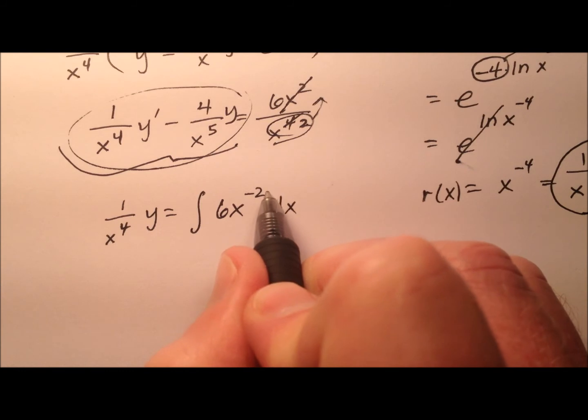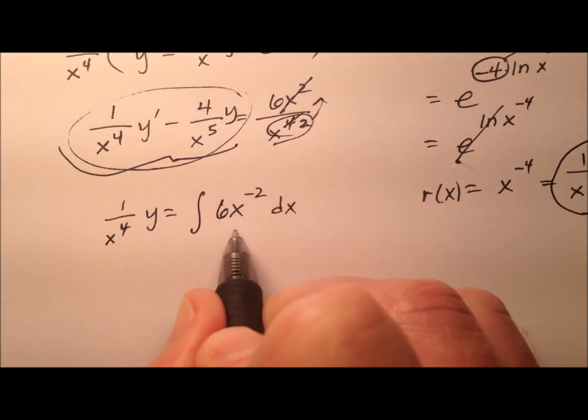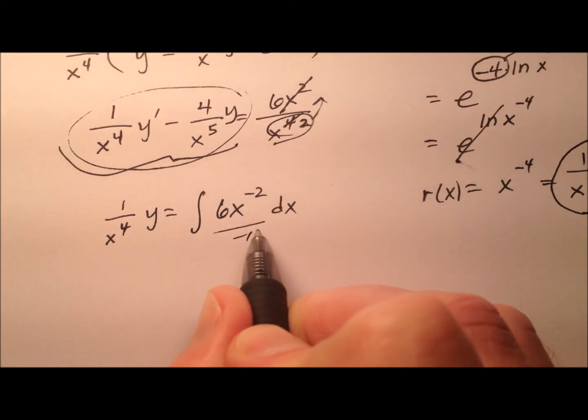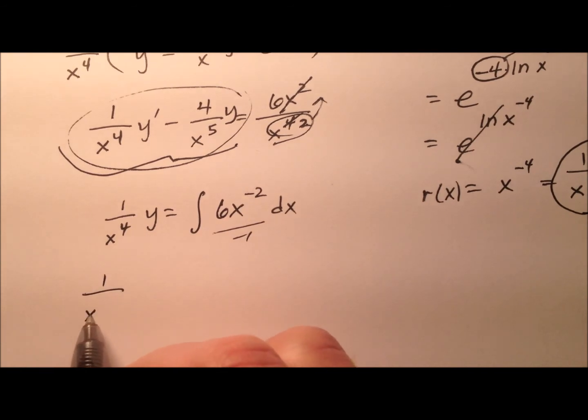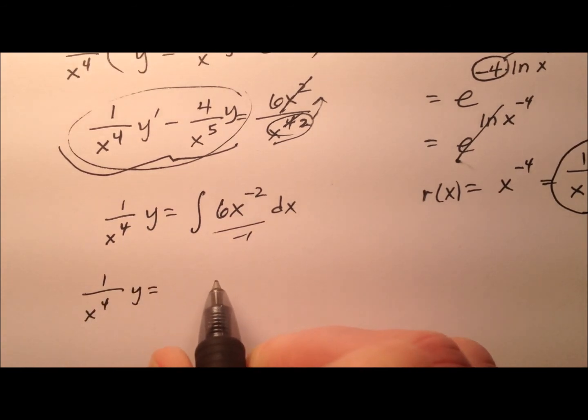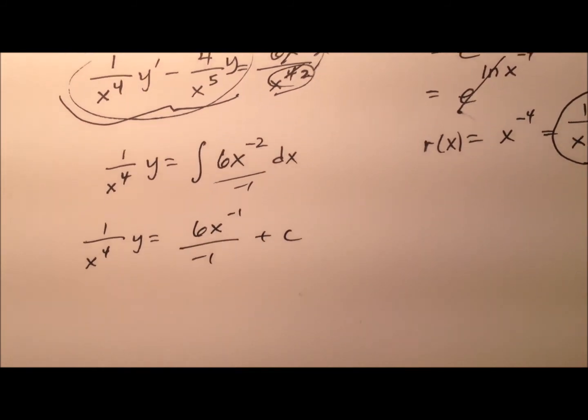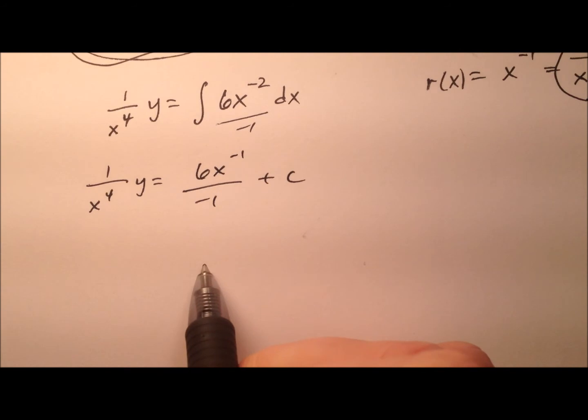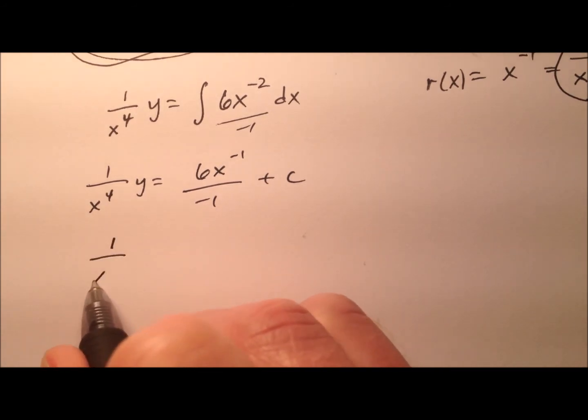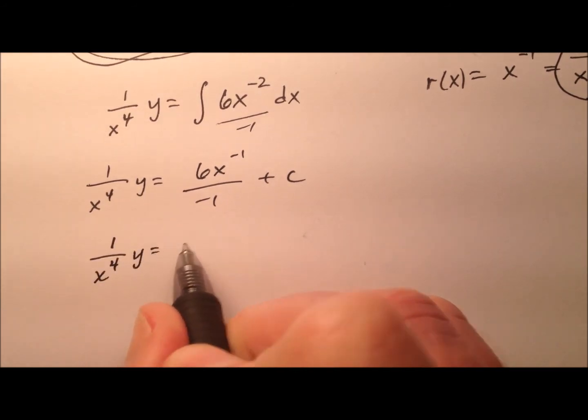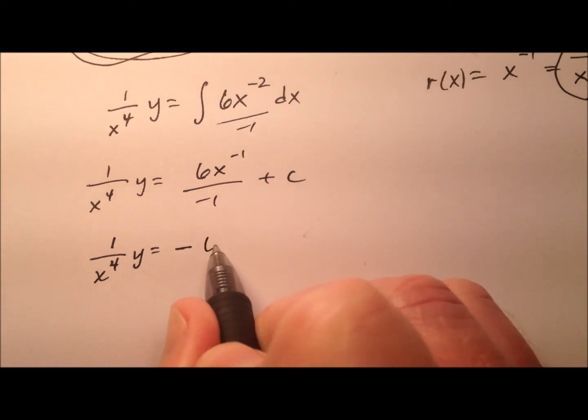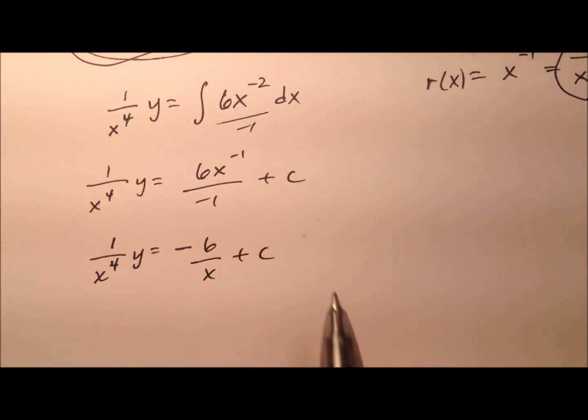So I'm going to add 1 to the power, so that's negative 1, and then divide by that new power of negative 1. So when I rewrite all this, I'll have 6x to the negative 1 over negative 1 plus c. And then I can just work some simplification here. So it'll be negative 6 over x plus c.